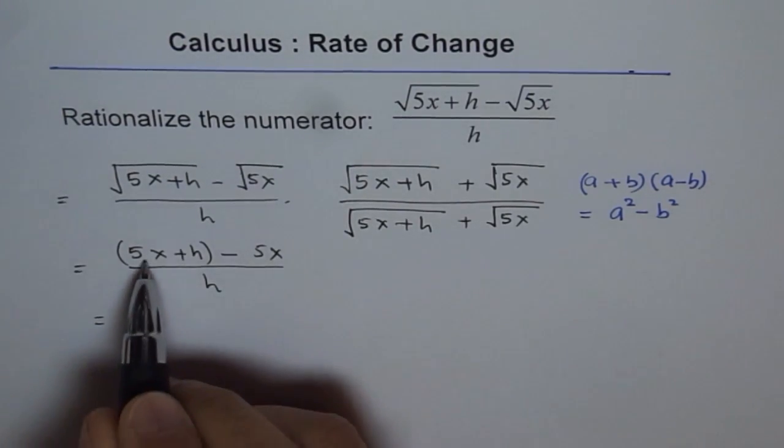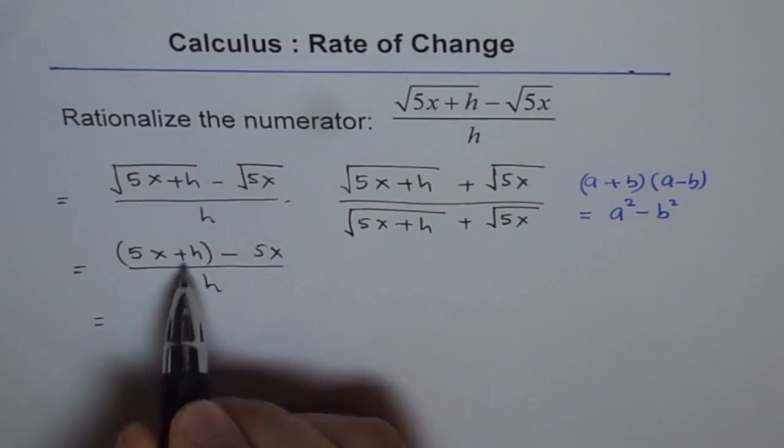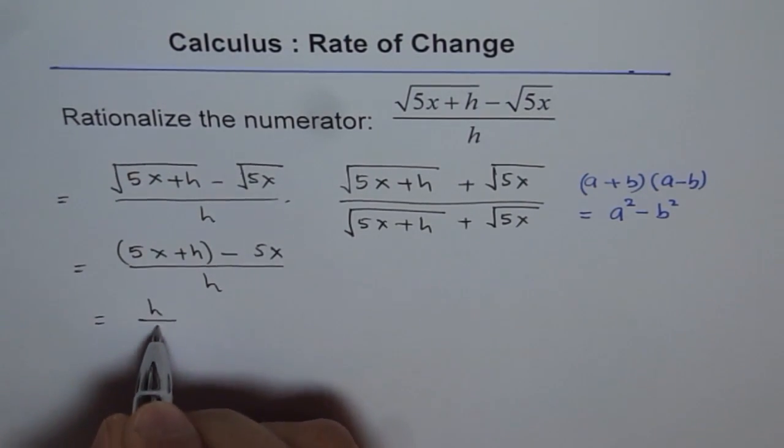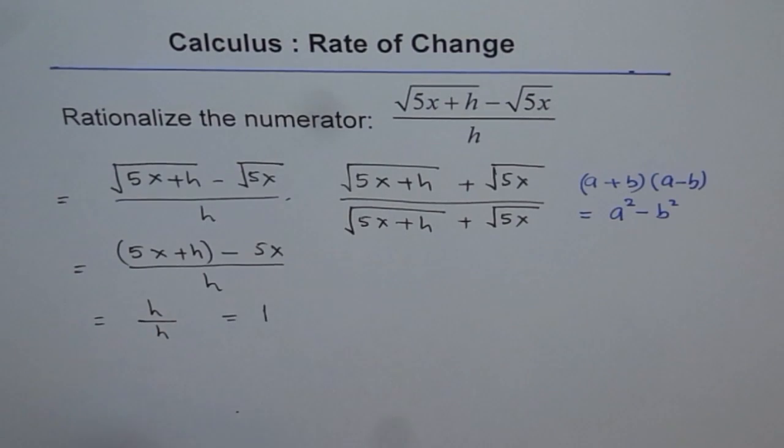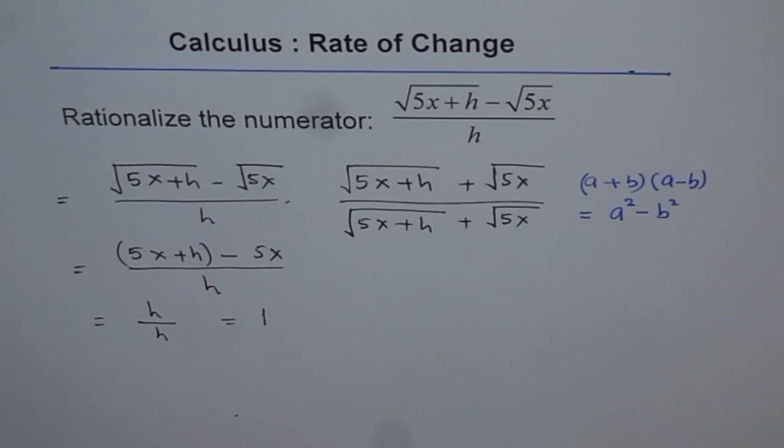And now 5x minus 5x is 0 and we are left with h over h, which is equal to 1. So the whole complicated thing is just 1 when simplified.